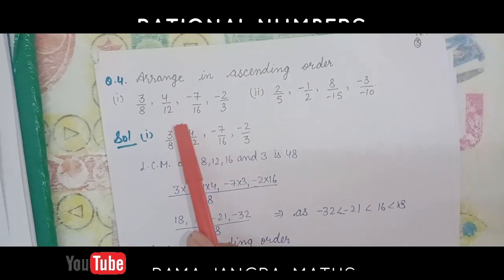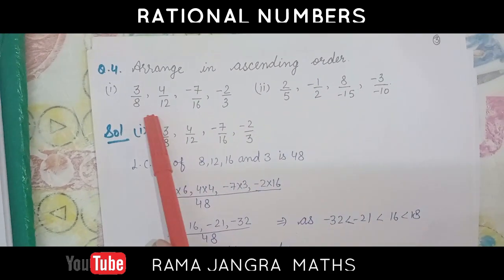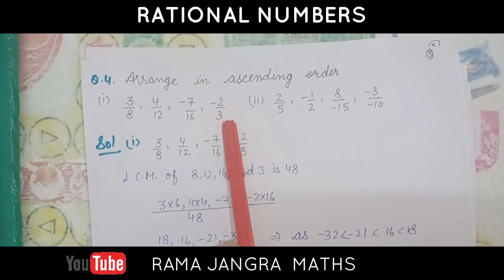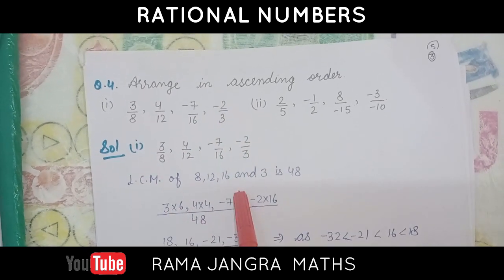Next question is, arrange in ascending order. Some rational numbers are given. We have to arrange them in ascending order.